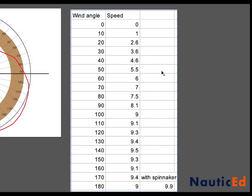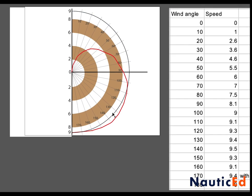This is the data from the manufacturer — not really, because we're doing virtual reality, but this is the data programmed into the VR system. These are the wind angles: at zero degrees you go zero speed, at 10 degrees barely one knot. It starts getting interesting around 30 degrees — 3.6 knots. At 40 degrees: 4.6 knots, at 55 degrees: 5.5 knots. At 90 degrees with 12 knots of wind, the boat does 8.1 knots. The table continues through all angles including spinnaker configurations, which we then plot onto a polar plot.